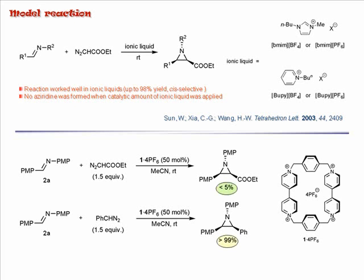Then, we sought to use more reactive diazo compounds in the reaction. Indeed, when phenyl diazo methane was tested under the same reaction conditions, the corresponding aziridines were formed with excellent yield and cis selectivity. In addition, decreasing the amount of cyclophane 1 to only 1 mol percent successfully furnished the aziridines in an even higher yield and similar stereoselectivity. Therefore, aziridiniation of imine with phenyl diazo methane was selected as our model reaction.